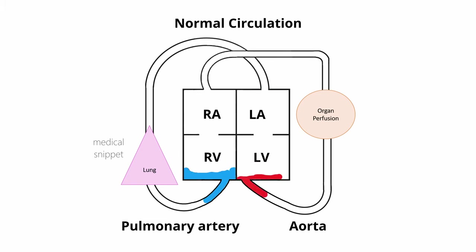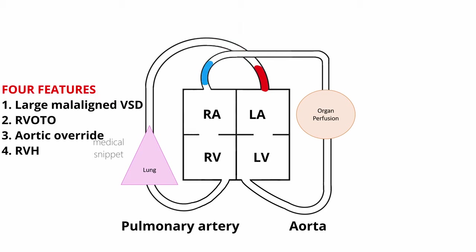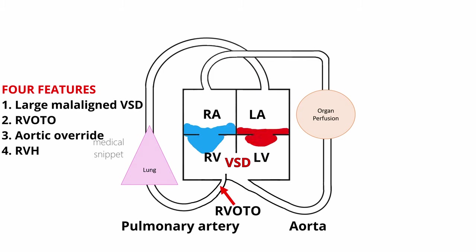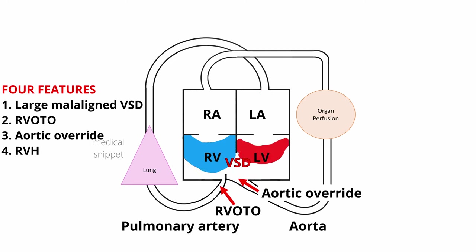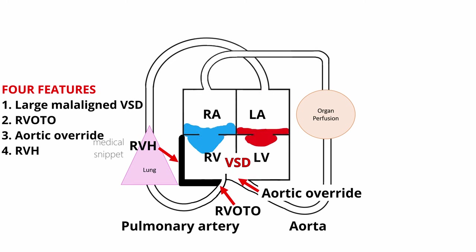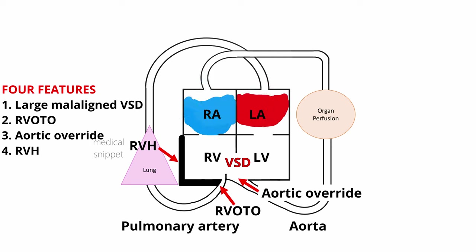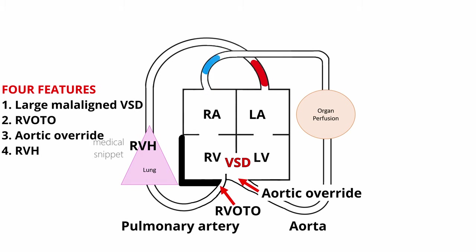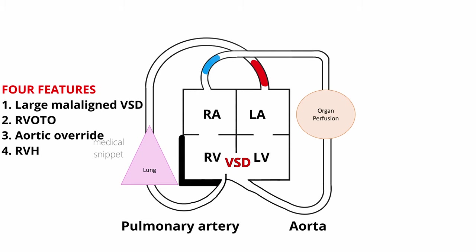Tetralogy of Fallot has four major features: a large ventricular septal defect, right ventricular outflow tract obstruction, overriding of the aorta, and right ventricular hypertrophy. The right ventricular hypertrophy is the response to the ventricular septal defect and right ventricular outflow tract obstruction. It should be noted that the VSD is mal-aligned.